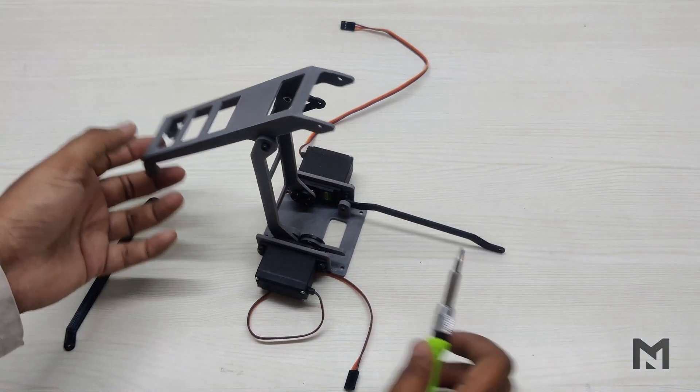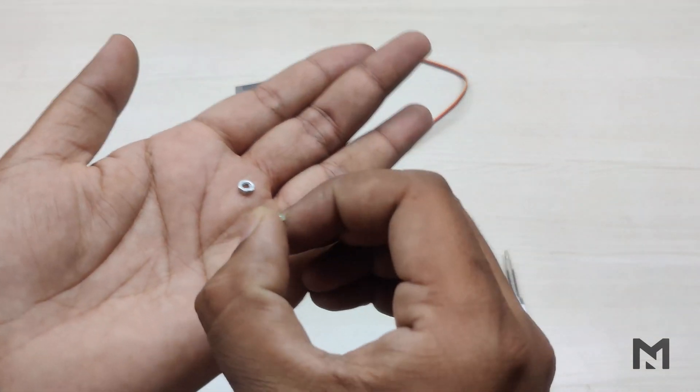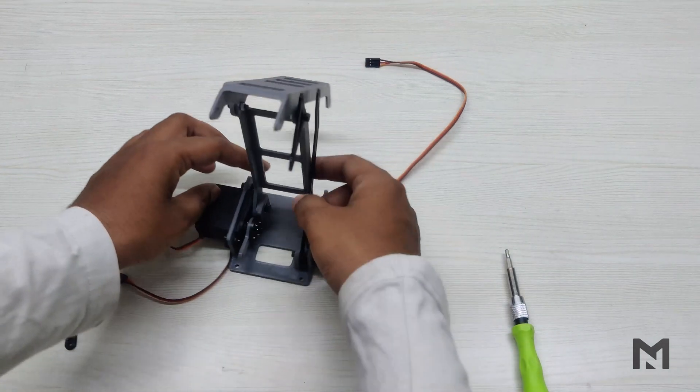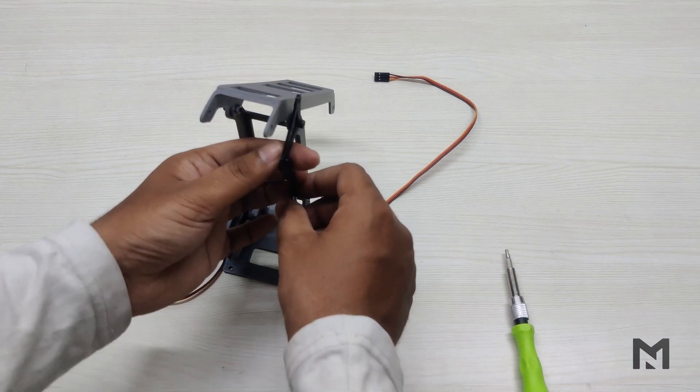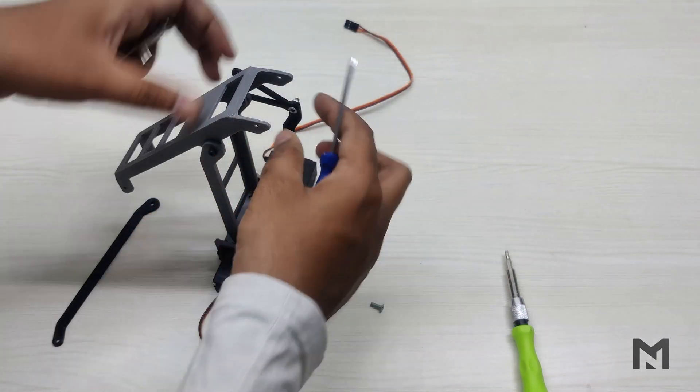And then attach the other hinge using a 10mm screw. Now take a flat head screw to connect the vertical link with the triangular section. I prefer the flat head screw over the hex screw because its head will not create an obstruction during the horizontal arm movement.